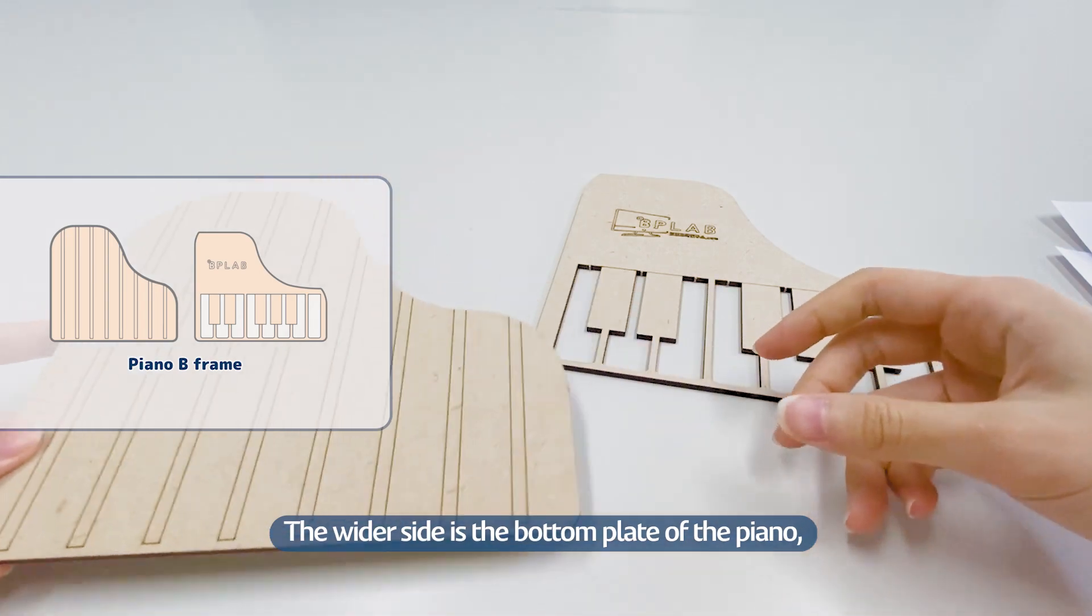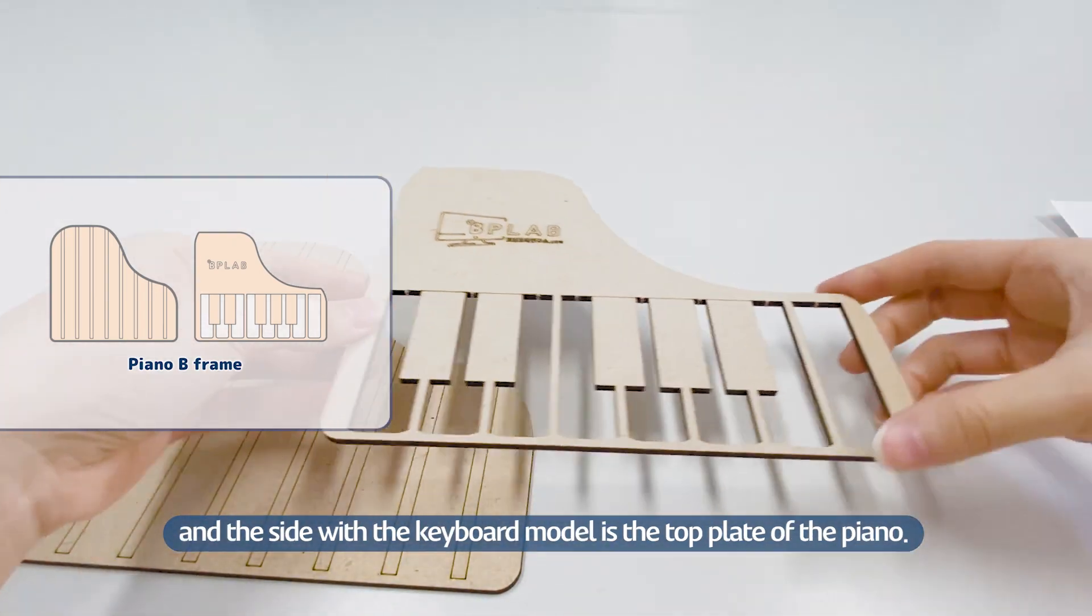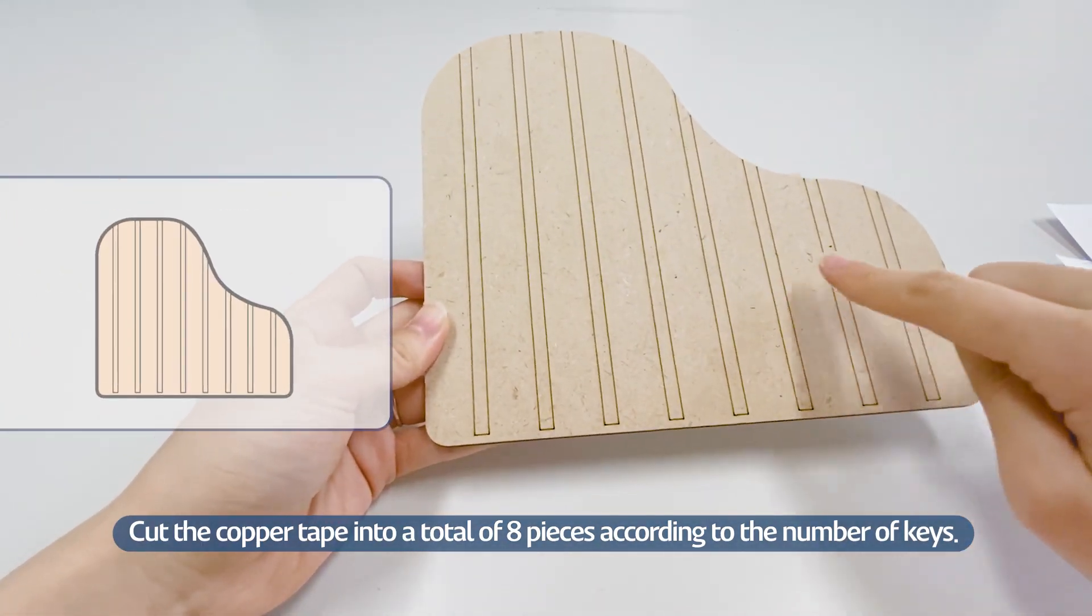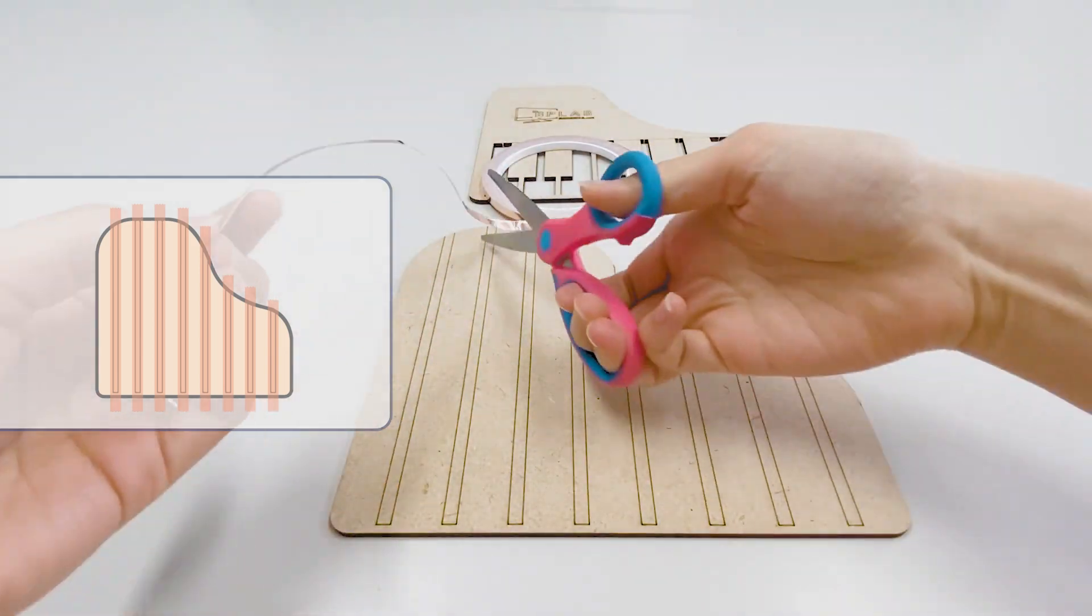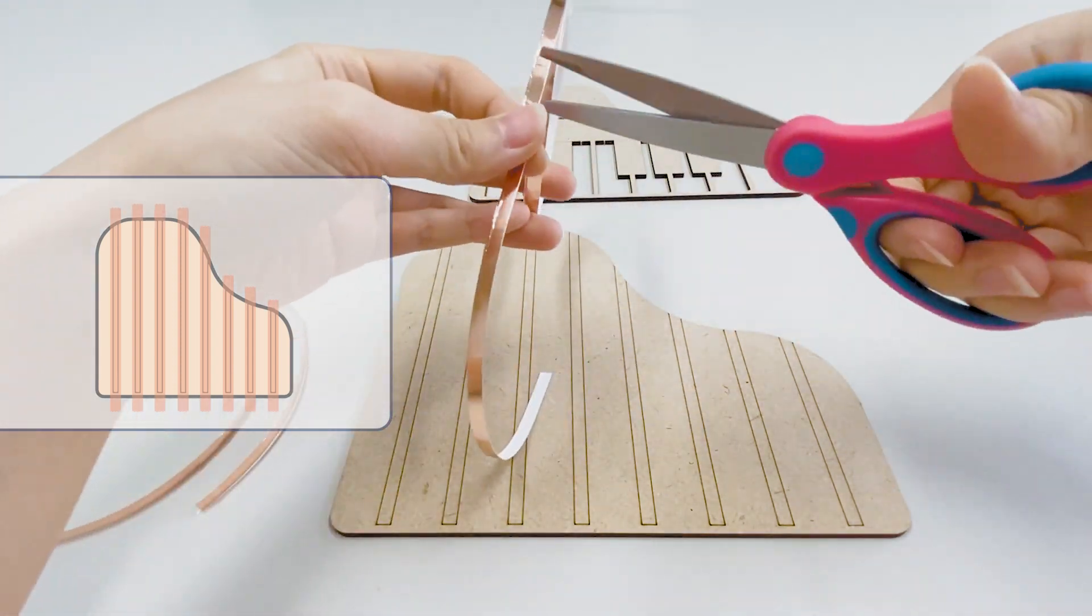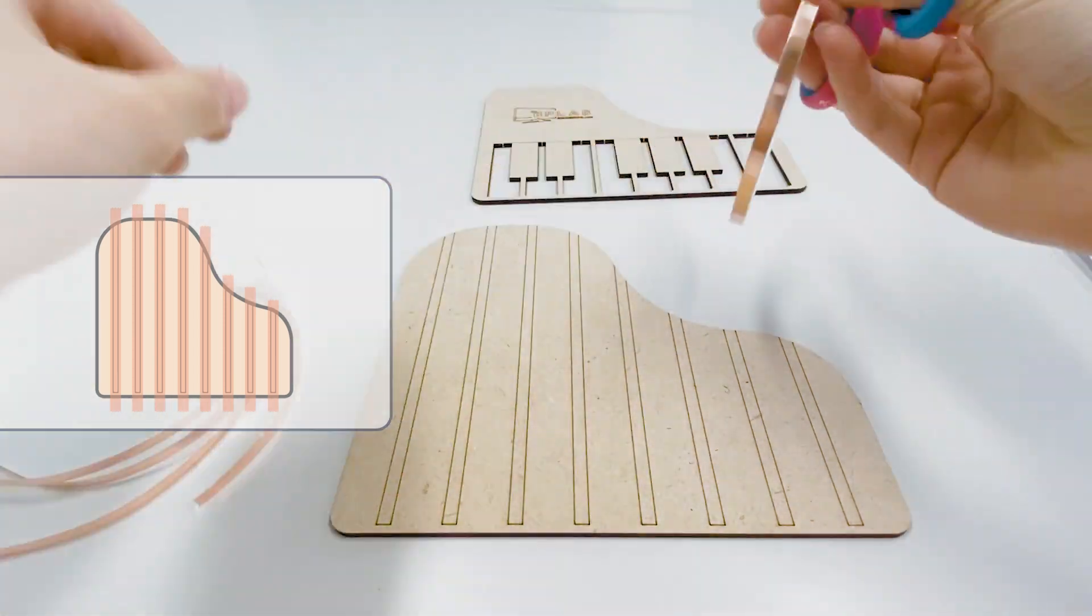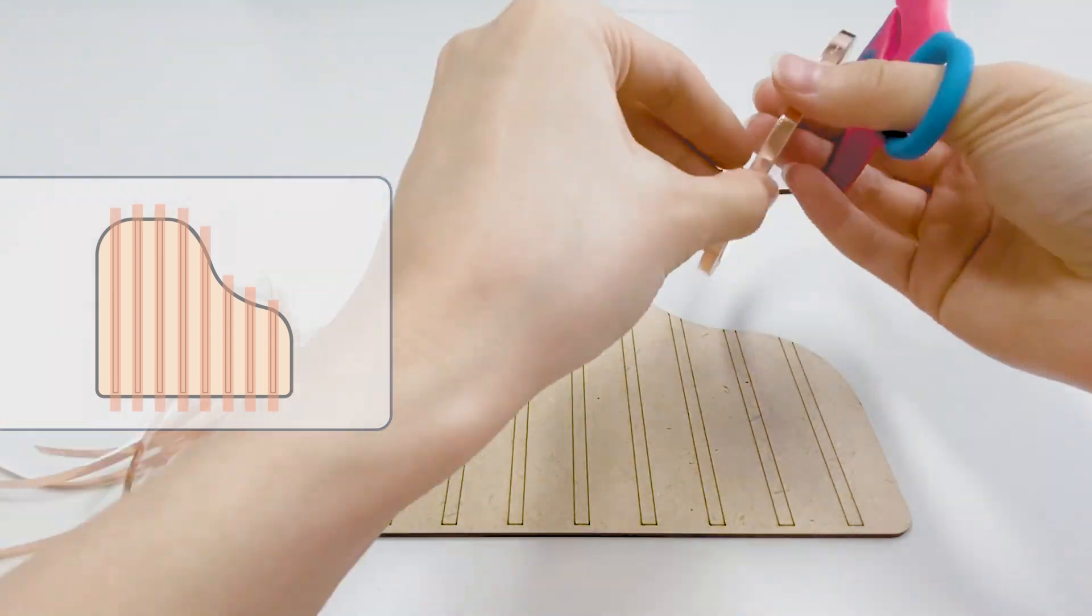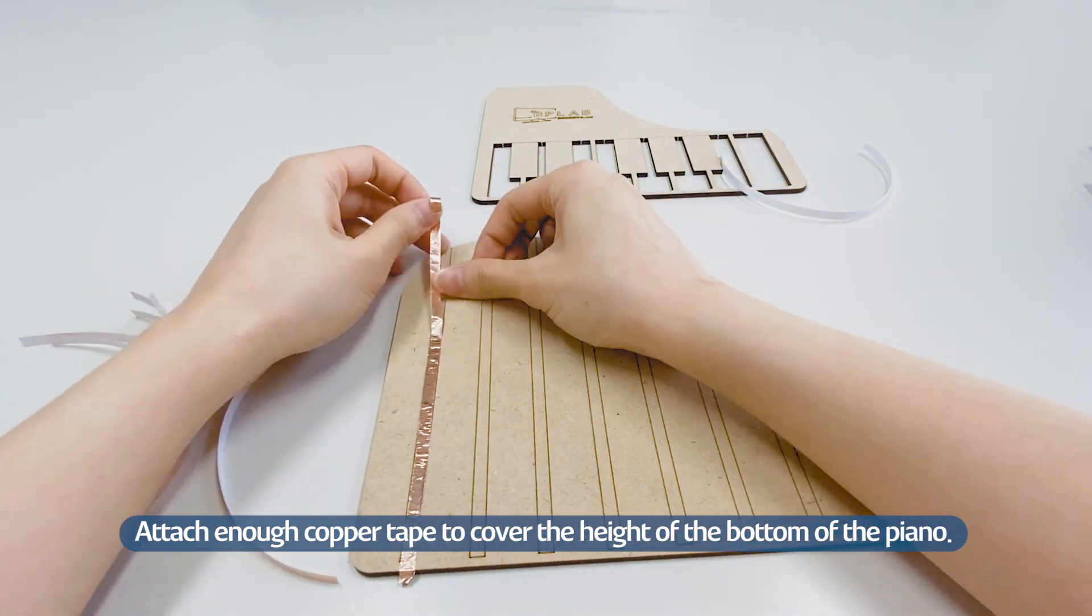The wider side is the bottom plate of the piano, and the side with the keyboard model is the top plate of the piano. Cut the copper tape into a total of eight pieces according to the number of keys. Attach enough copper tape to cover the height of the bottom of the piano.